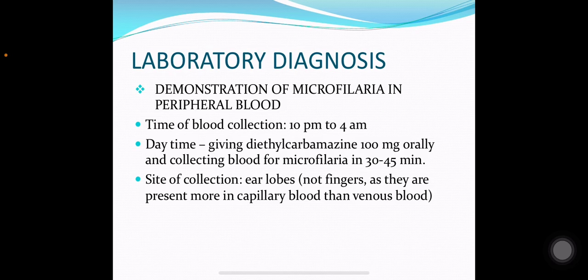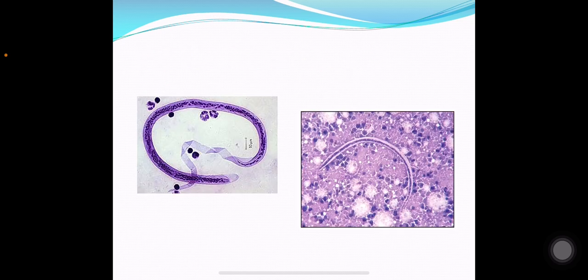In laboratory diagnosis, demonstration of microfilaria in the peripheral blood is primary. Time of blood collection for Wuchereria bancrofti is 10 pm to 4 am. If blood collection is to be done in the daytime, the diethylcarbamazine provocation test can be used, in which 100 mg of diethylcarbamazine is given orally to stimulate microfilaria into the peripheral circulation. Blood can be collected 30 to 45 minutes after giving diethylcarbamazine. The site of collection is the earlobe, not the finger, as microfilaria are more present in capillary blood rather than venous blood.